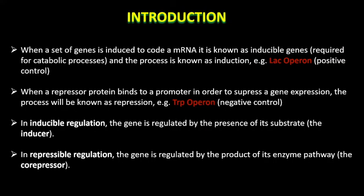When a set of genes is induced to code an mRNA, it is known as inducible genes. In inducible regulation, the repressor is inactivated and dissociates from the operator, up-regulating the operon expression. While in repressible regulation, the repressor binds to the operator and down-regulates the operon expression. In inducible regulation, the gene is regulated by the presence of its substrate, which is lactose in the case of lac operon. In repressible regulation, the gene is regulated by its enzyme pathway's corepressor, which is tryptophan in the case of tryptophan operon.